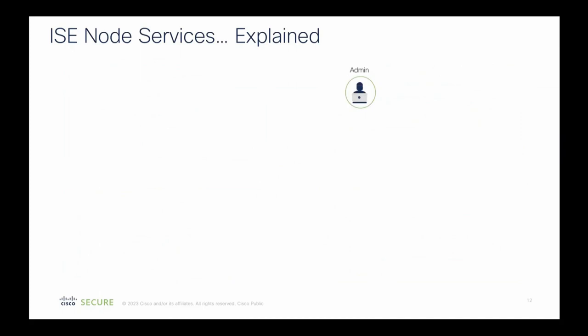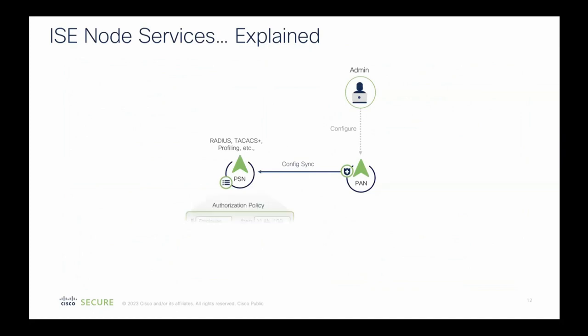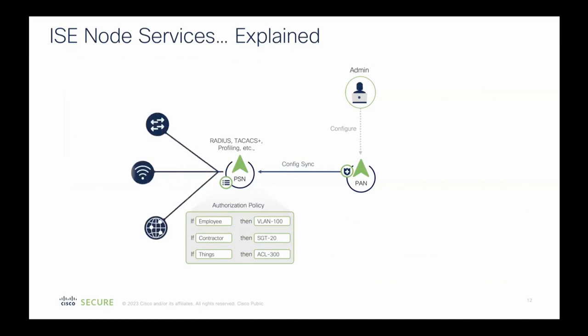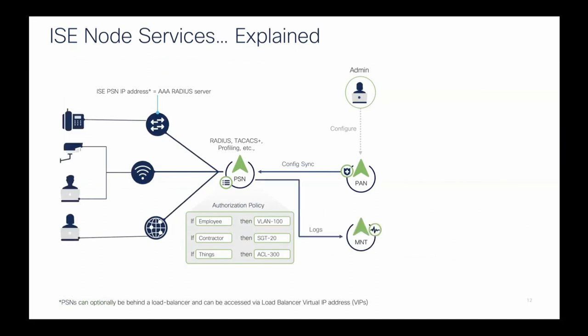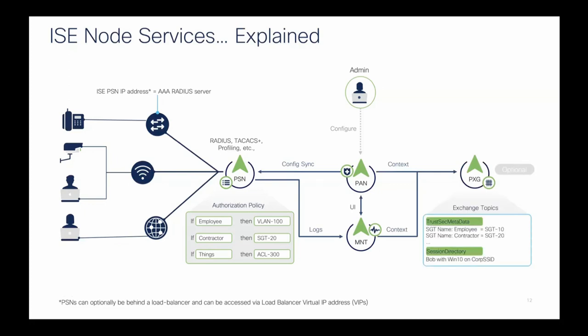The ISE admin logs in and configures policies for network access control, which get provisioned out on the PSN. The PSN processes incoming RADIUS requests when users log in through network devices. Those events get logged to the M&T node and can be shared in the UI via live logs. We can also share context out through the PX Grid node, most popularly used with TrustSec and the session directory, notifying any listeners subscribed to those topics when new endpoints join the network.